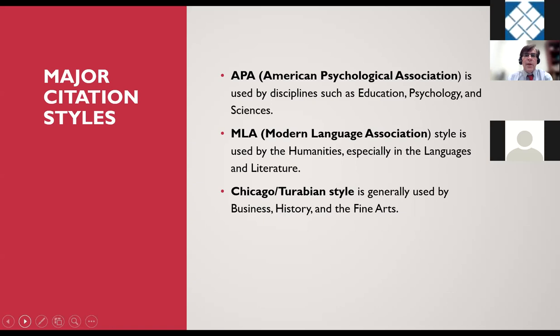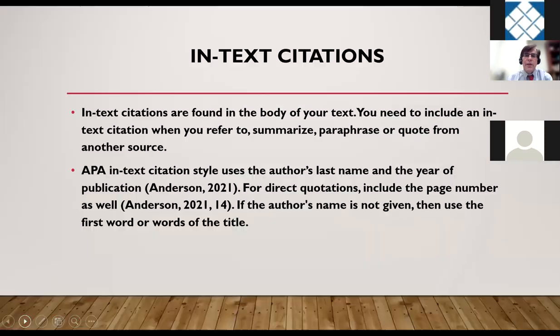There are three major citation types we'll be talking about: APA, MLA, and Chicago Manual style. APA, or American Psychological Association, is used by disciplines such as education, psychology, and the sciences. MLA is used by the humanities, particularly languages and literature. And Chicago, or Turabian style as it used to be called, is generally used by disciplines in business, history, and fine arts.